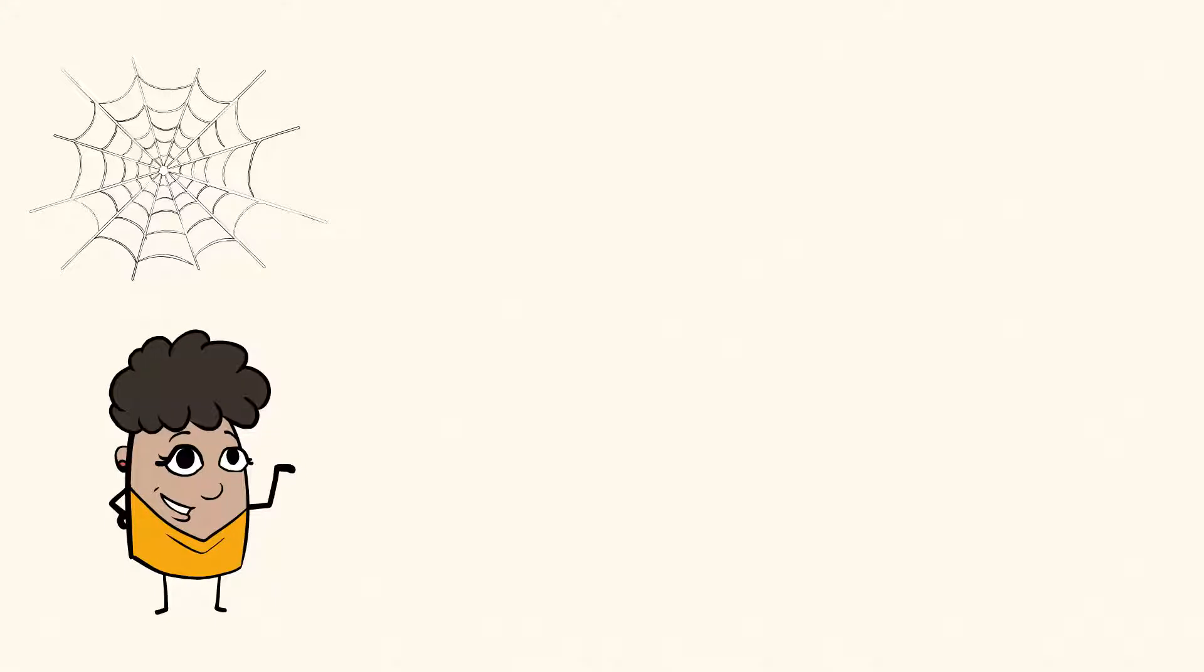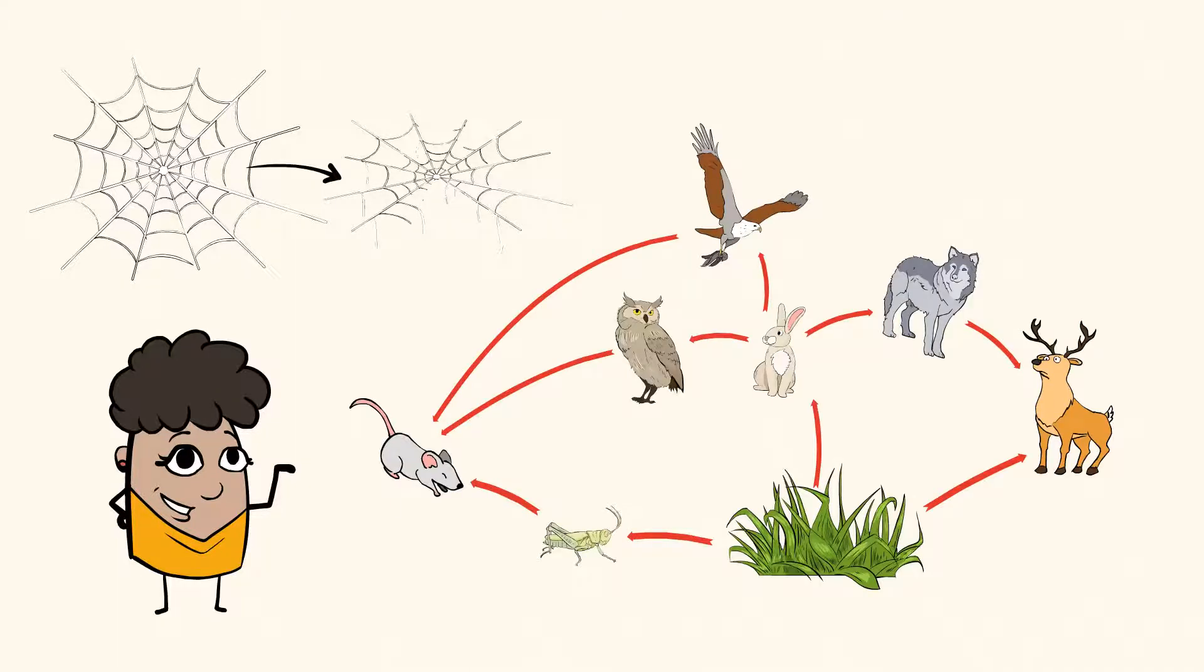Imagine if one string in a spider web is broken. The web is weaker and will fall apart. This is also true of a food web. What do you think would happen if the mouse disappeared from the forest? Take a look. Without the mouse,